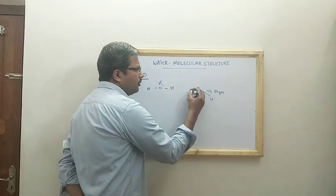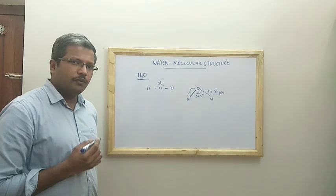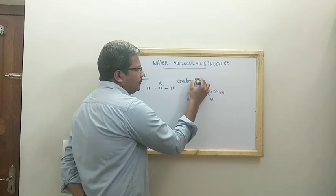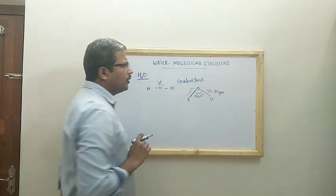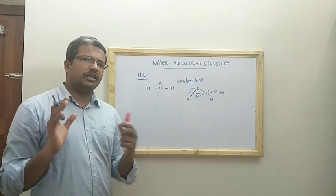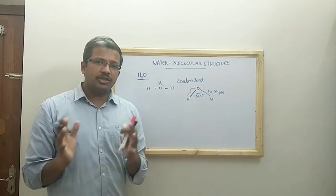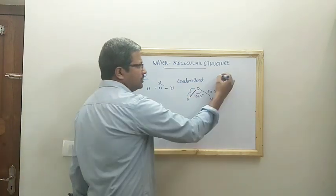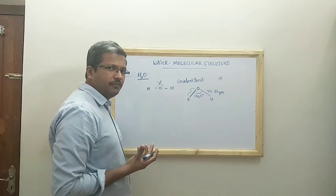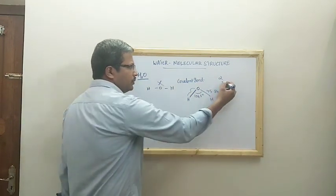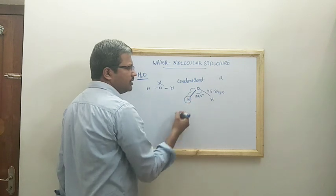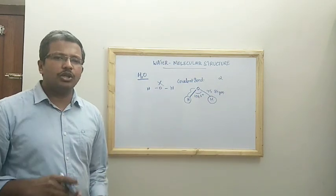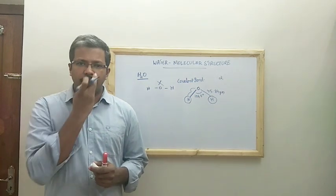This bond between oxygen and hydrogen is a covalent bond. A covalent bond is a chemical bond formed by the sharing of electrons between two atoms. Oxygen has a valency of two — two electrons are unfilled — and each hydrogen contributes one electron, so the pairing is completed and the water molecule is formed.